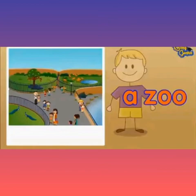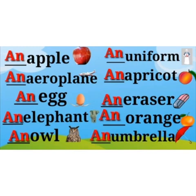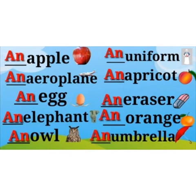Kids, once again repeat it. First, apple. A-P-P-L-E. Apple. When the words start with a vowel, before that we should use AN. AN apple. Next one, aeroplane. A-E-R-O-P-L-A-N-E. Aeroplane. AN aeroplane. Next, egg. E-G-G. Egg. AN egg. Egg starts with the letter E. E is a vowel. So we should use AN. AN egg. Elephant. E-L-E-P-H-A-N-T. Elephant. AN elephant. This word also starts with a vowel, so we should use AN. AN elephant.